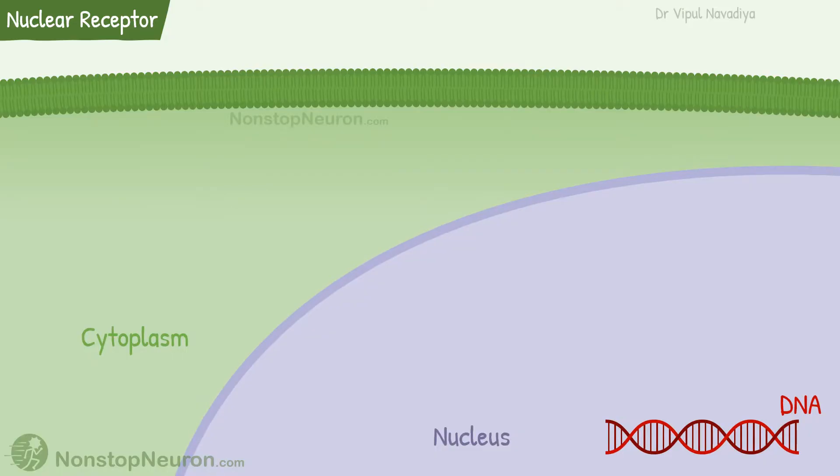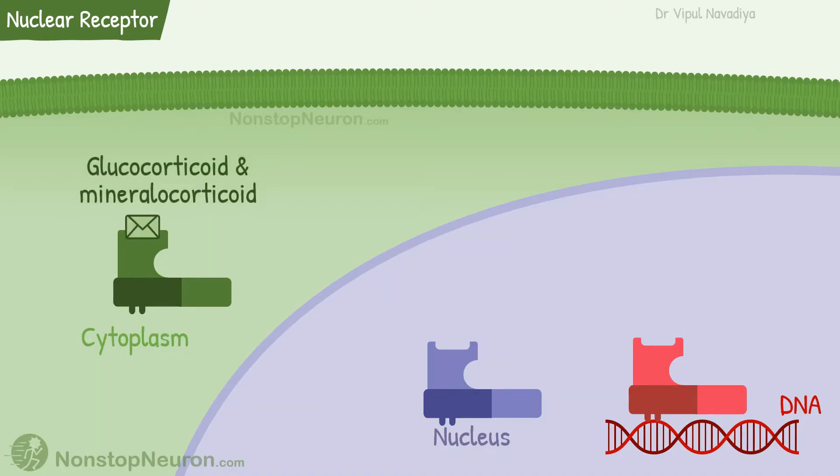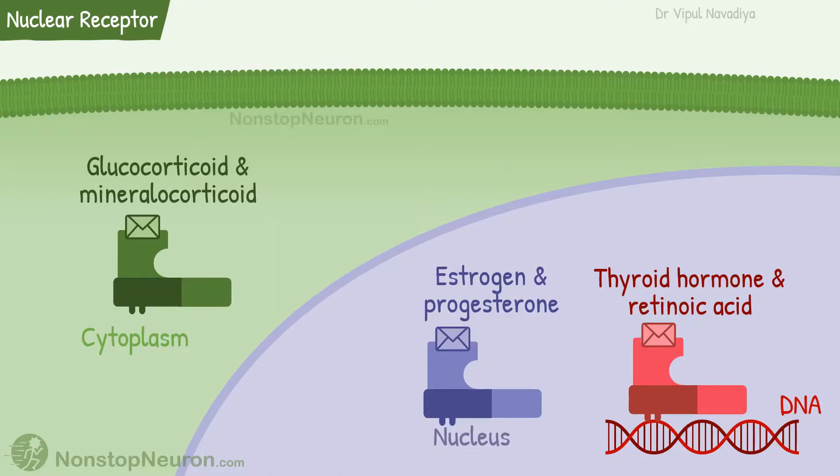Now let's talk about their exact locations. Different types of receptors are found at different sites under their inactive state. Glucocorticoid and mineralocorticoid receptors are located in the cytoplasm under resting conditions. Estrogen and progesterone receptors are found in the nucleus. And receptors for thyroid hormone and retinoic acid are attached to DNA even under resting conditions.